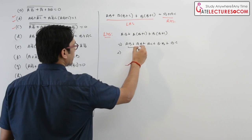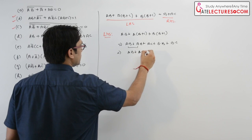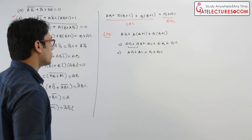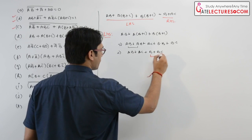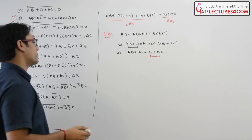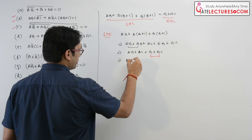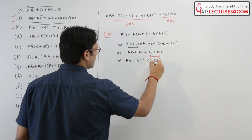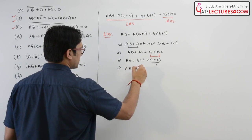Now instead of writing AB two times you can write it once, so it is AB + AC + B + BC.